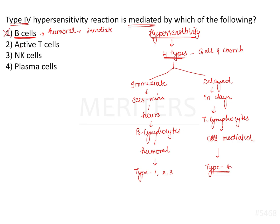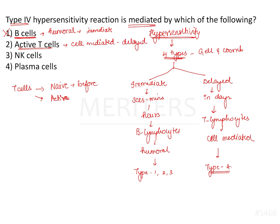Option 2 says active T cells. There are two different terms to describe T cells: naive T cells and active T cells. Naive T cells are those before antigenic exposure. Active T cells are produced once the body is exposed to an antigen and activation of T lymphocytes occurs. Active T cells form a component of the cell-mediated immune system and therefore form a part of delayed type of hypersensitivity.